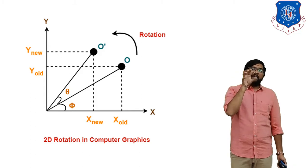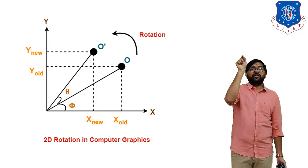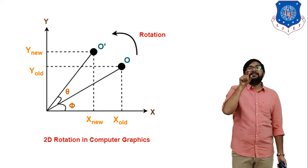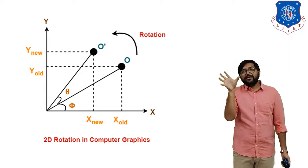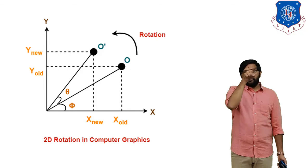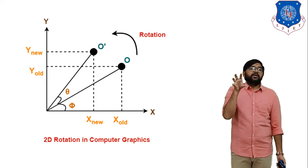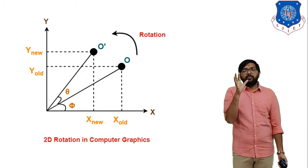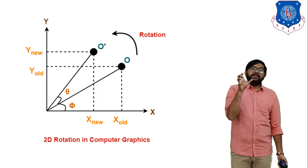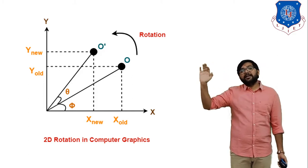Now in this figure we have one more point, O dash — the new point after giving anti-clockwise rotation at angle theta. The angle between O and O dash is theta, but O dash makes an angle of (theta + phi) with the x-axis. The coordinates of O dash are (x_new, y_new). From the corresponding triangle, x_new = R cos(θ + φ) and y_new = R sin(θ + φ).